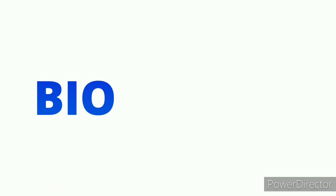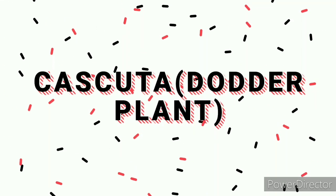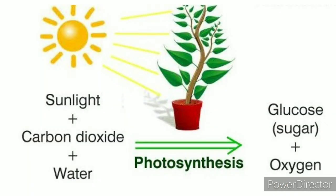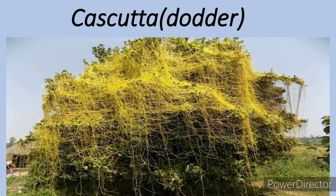Hello students, welcome to Bairatma's Biology Classes. Plants are amazing in nature since they do photosynthesis, but all plants do not perform photosynthesis. There are some plants which do not perform photosynthesis and they live on other plants for nutrients. An example is Cuscuta, the dodder plant, known in Hindi as Amarbel. Today we will study about Cuscuta, or the dodder plant.